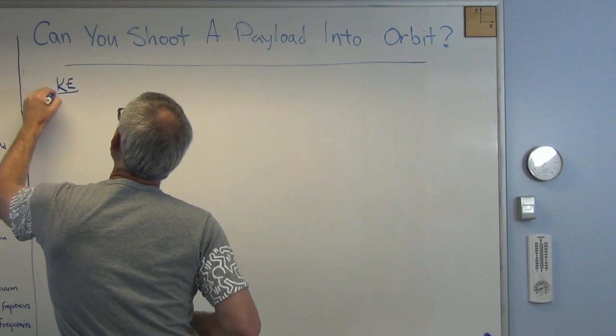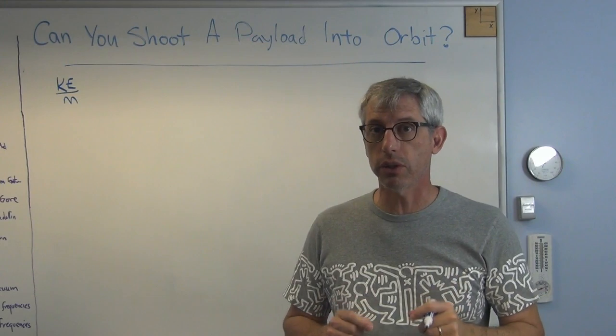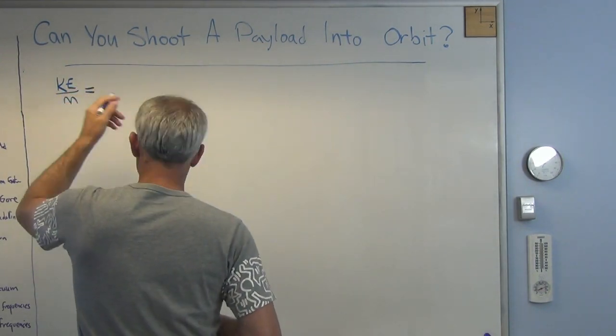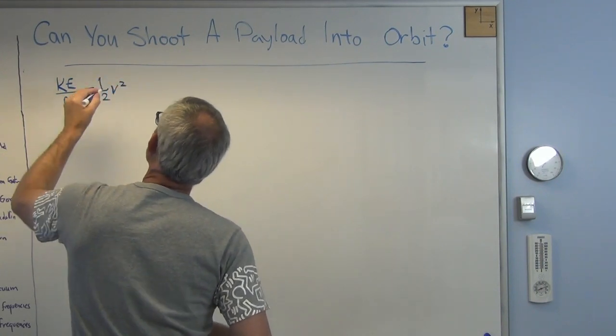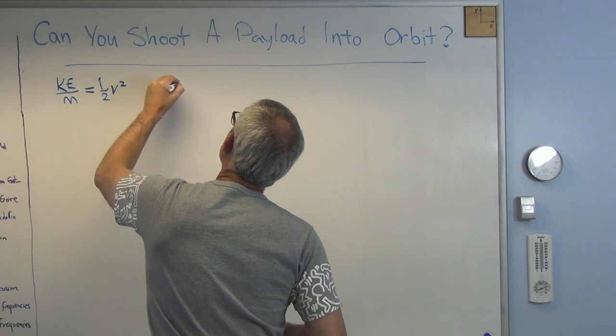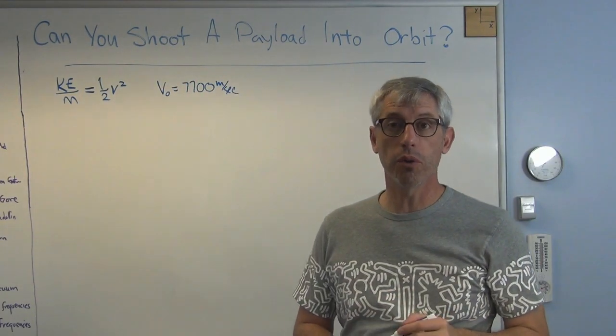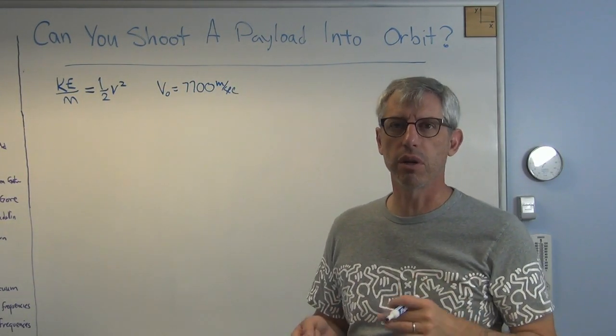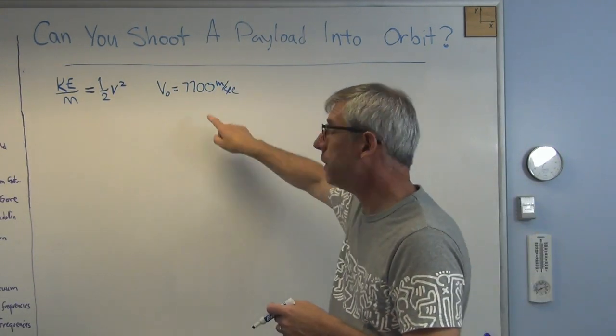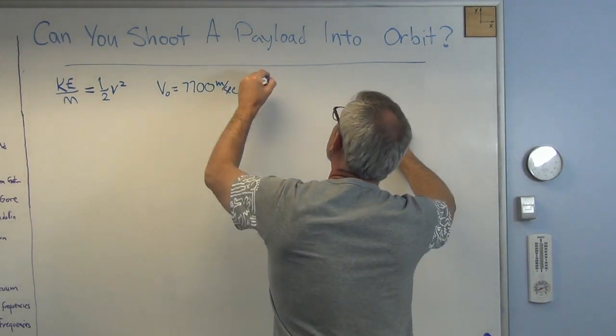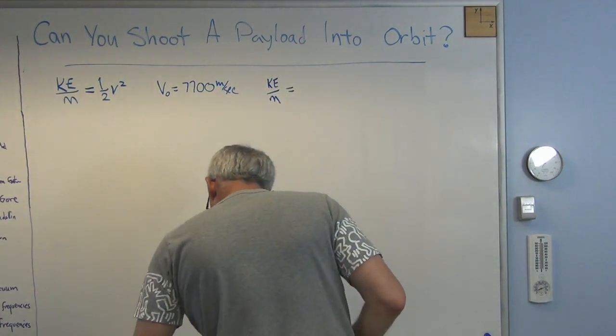The numbers we want to work with, I'm going to write KE over M. That's kinetic energy per unit mass. That's if you have a mass of one kilogram. That's one half, not MV squared, but V squared. V's orbit is, if you're in a low Earth orbit, about 400 kilometers, 250 miles pretty much. We figured out in an earlier video, that's about 7,700 meters per second, which is really trotting right along.